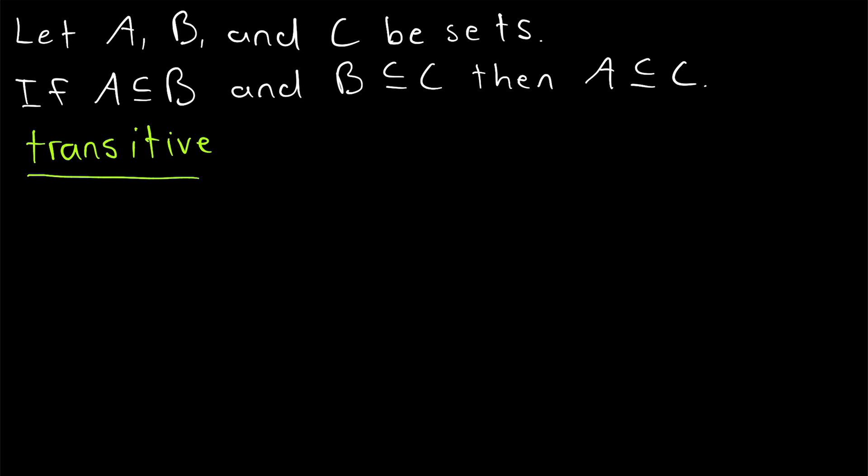You should be familiar with transitivity. It's usually introduced to us with regards to our favorite relation equals, where we say if A is equal to B and B is equal to C, then by the transitive property of equality, A is equal to C.